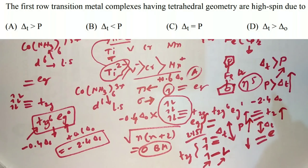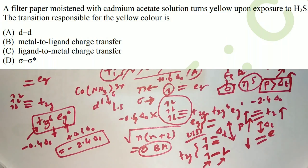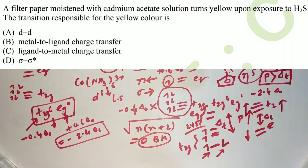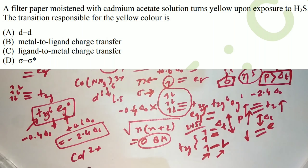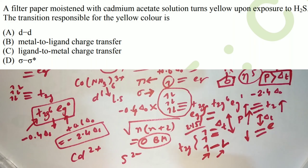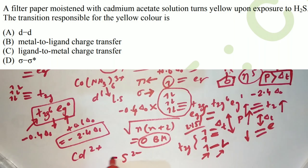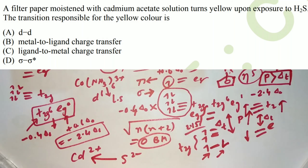The next question from JAM 2015 says cadmium acetate solution turns yellow upon exposure to H2S. The basic theory is that Cd²⁺ (from cadmium acetate) and S²⁻ (from H2S) undergo ligand-to-metal charge transfer, which is responsible for the color. This is a very simple concept.